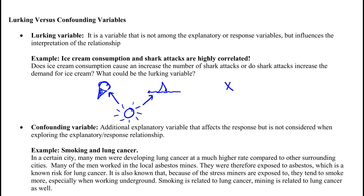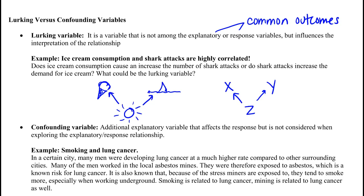A lurking variable is one where whatever original relationship we were trying to look at wasn't actually considered, and it actually influences both what we thought of as the explanatory and the response variables. In this case, the explanatory and response variables become common outcomes. This is how you can view the relationship — this is our lurking variable, Z, causing something to happen with both our original explanatory and response variables.